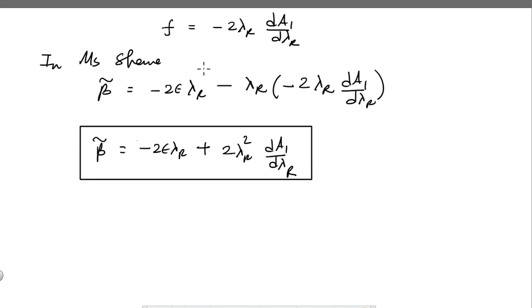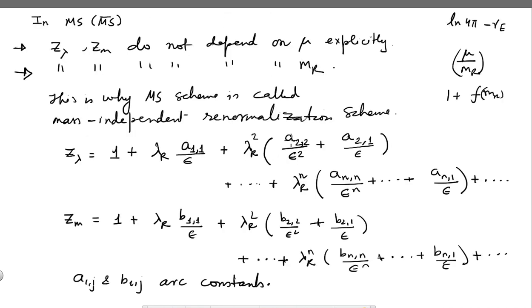We also saw that the contribution to beta tilde or the beta function comes from only the single pole terms. Let us see what this A1 is. A1 is here. This Z lambda is the renormalization constant for the coupling constant. I have written it not as an expansion in lambda r but rather collected terms according to the order of poles. A1 has all the terms which give you a single pole.